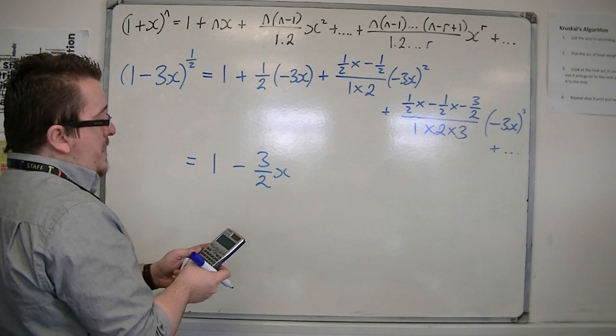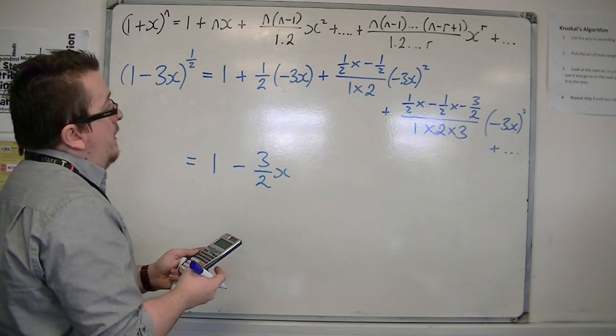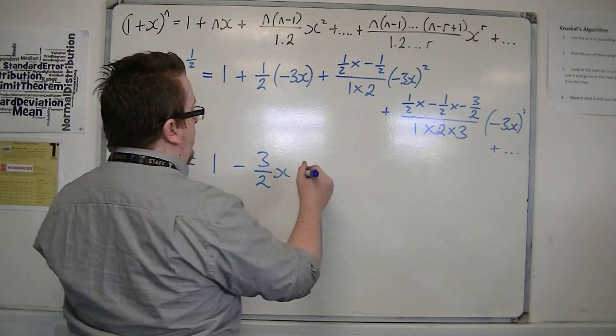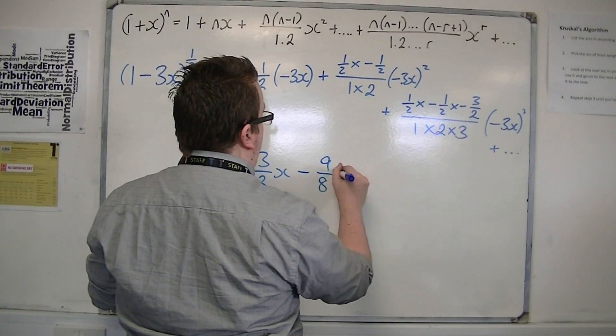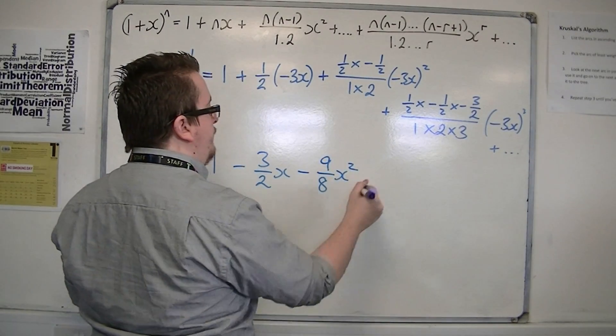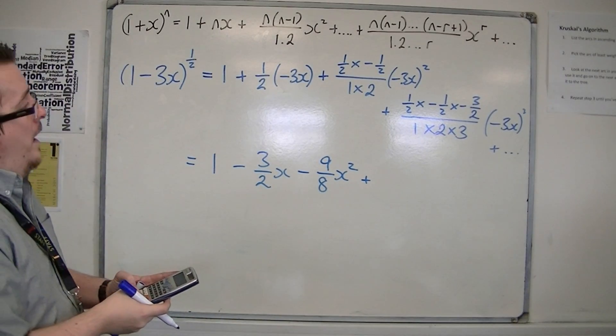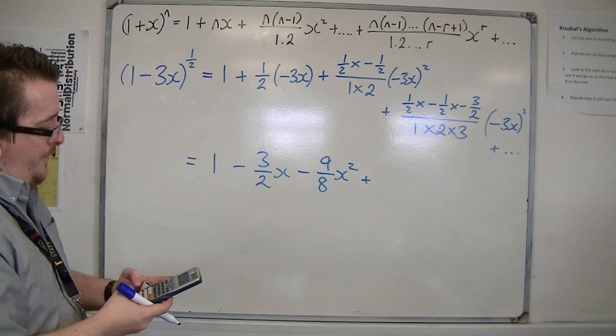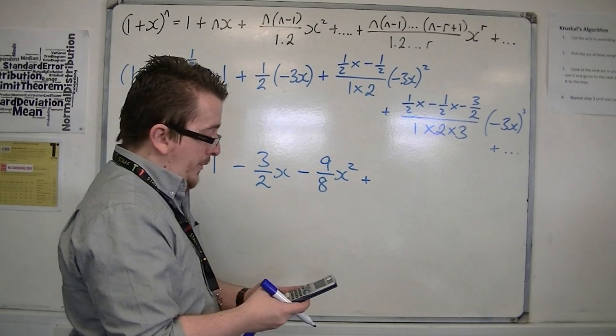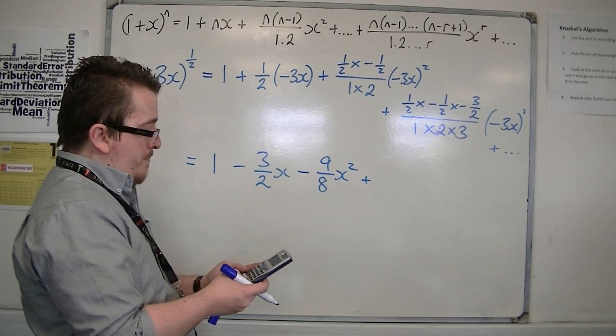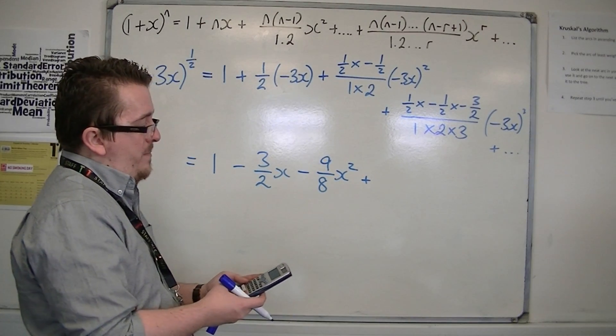So I should get -9/8 x squared. Then I've got 1/2 times -1/2 times 3/2, divided by 1 times 2 times 3, so divided by 6.